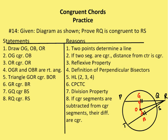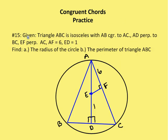Moving on to the next problem. I'm given triangle ABC as isosceles with AB congruent to AC, AD perpendicular to BC, and EF perpendicular to AC. Given that ED equals 1, AF equals 6, and AB and AC are congruent since it's an isosceles triangle. So EF is a perpendicular bisector of AC, meaning FC and AF are congruent.